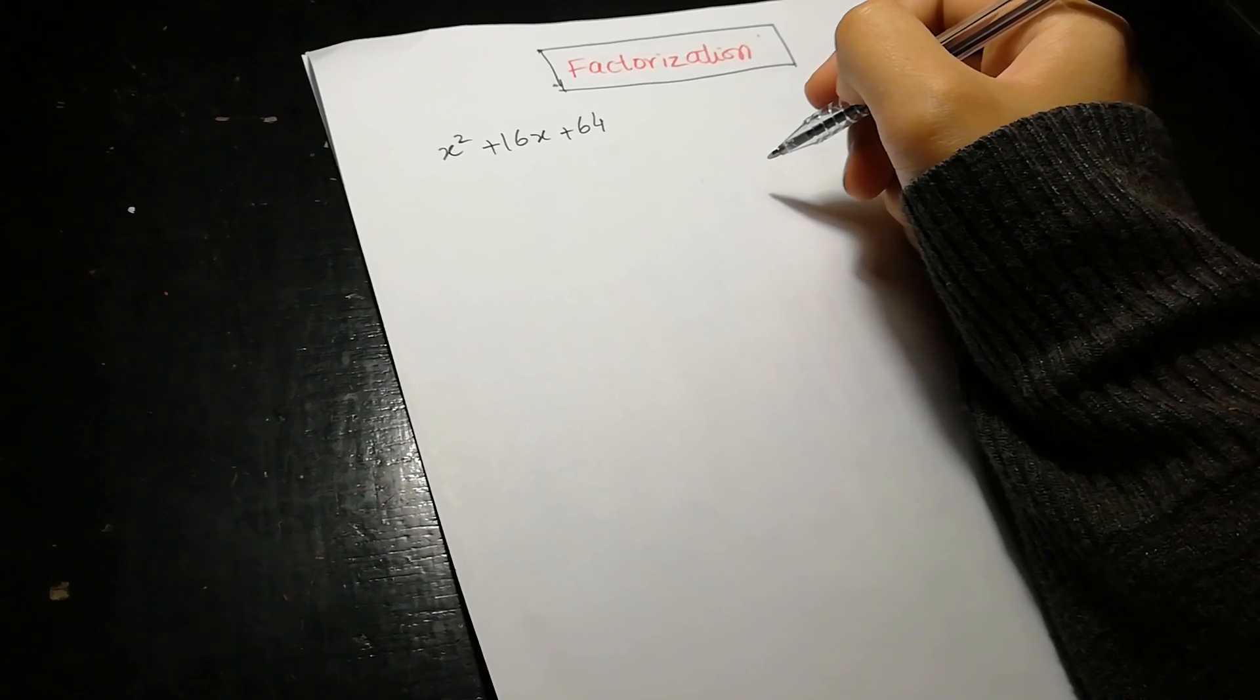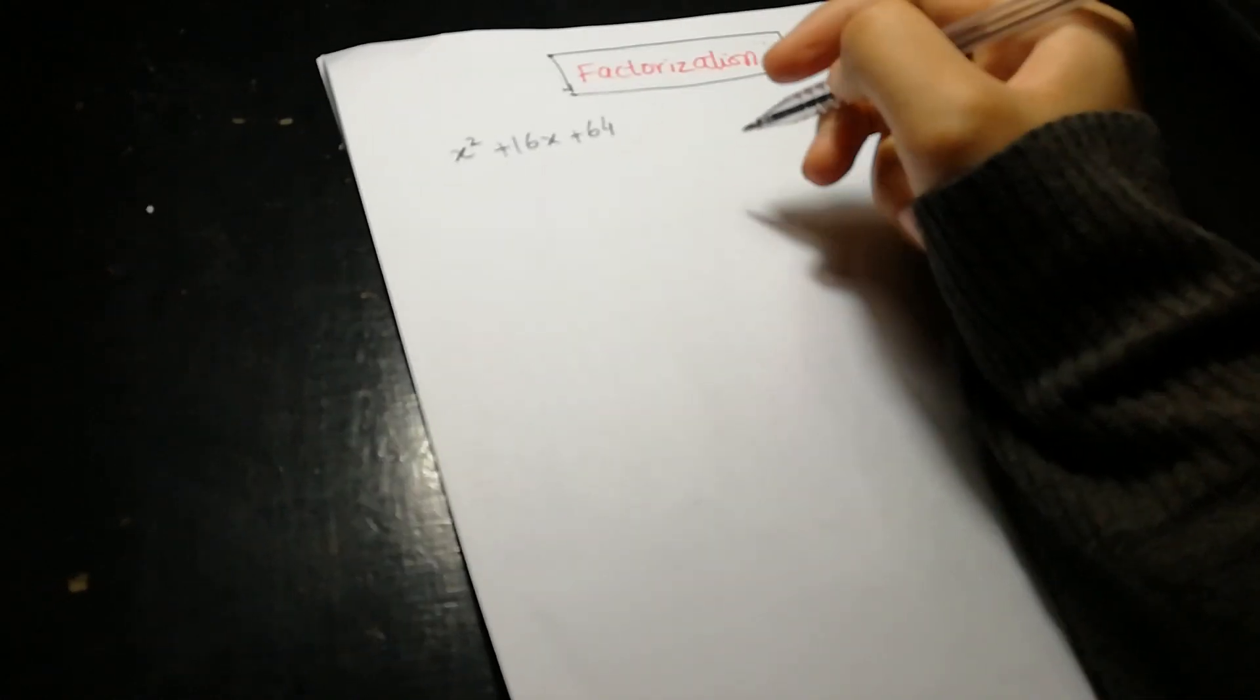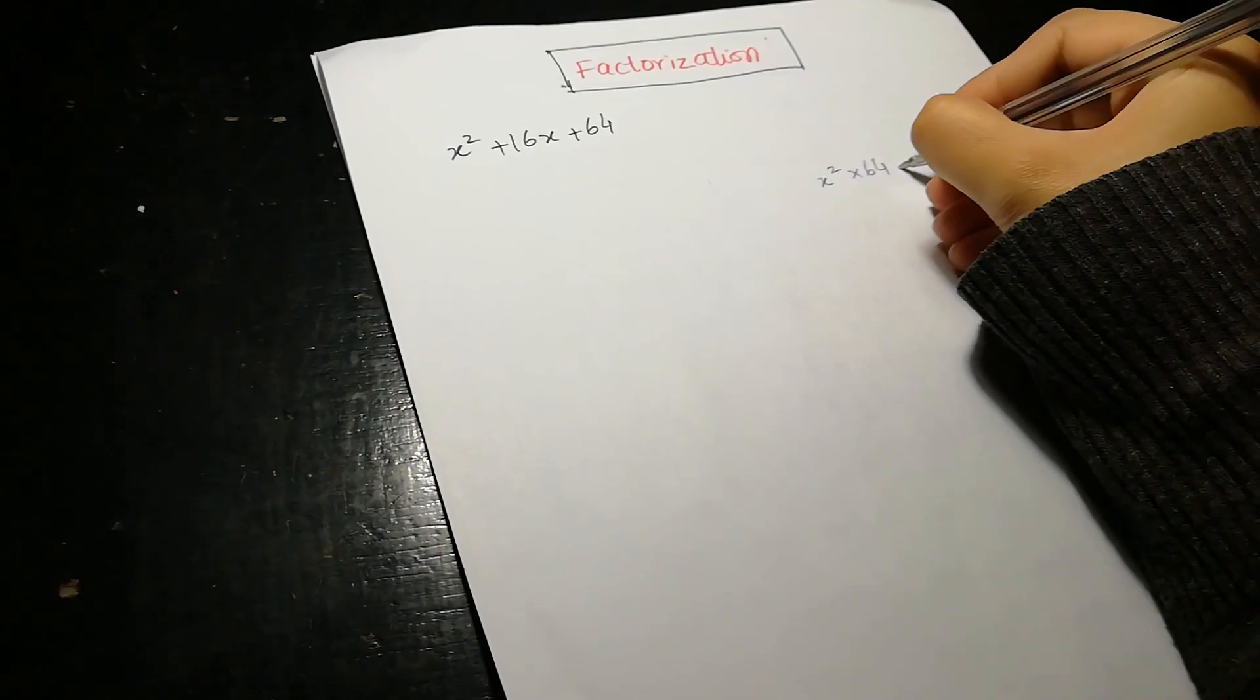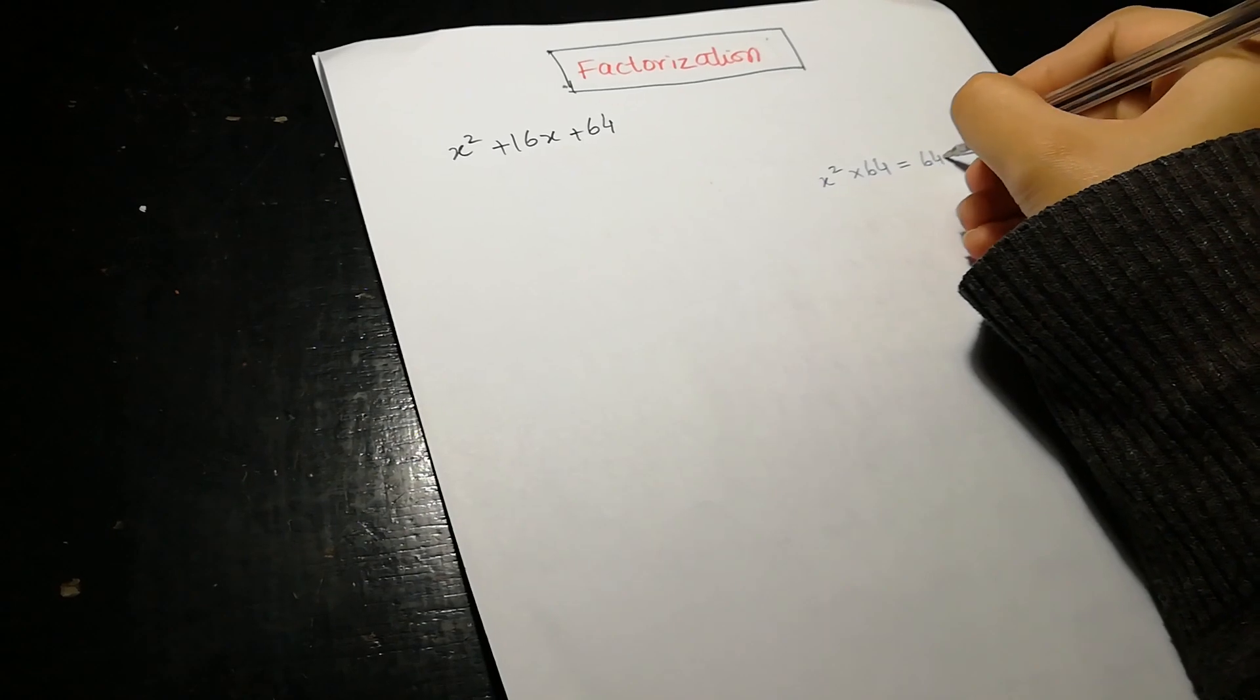So all we need to do is just multiply the outermost terms. Like x square multiplied by 64 equals 64x square.